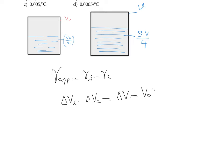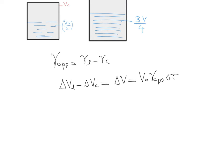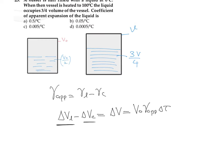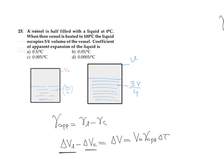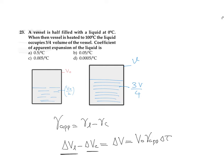For this calculation we need the final volume of the container, but the question does not mention it. So we cannot directly find the apparent expansion here. Whatever options are given must relate to the real expansion of the liquid, since the volume occupied is three-fourths of the current vessel volume — which has also increased.